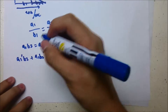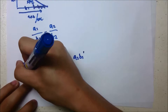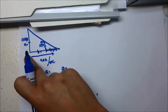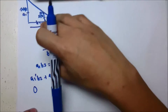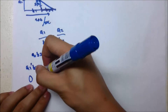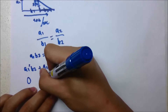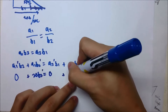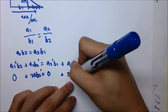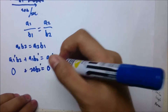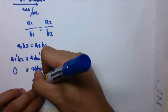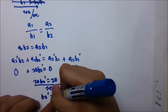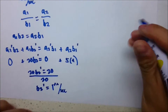Plugging in values: a1-prime is zero because the height of the street lamp doesn't change, and a2-prime is also zero because the man's height doesn't change. So we have a1 (which is 20 feet) times b2-prime equals a2 (which is 5 feet) times b1-prime (which is 4 feet per second). Simplifying, 20·b2-prime equals 20, so b2-prime equals 1 foot per second.